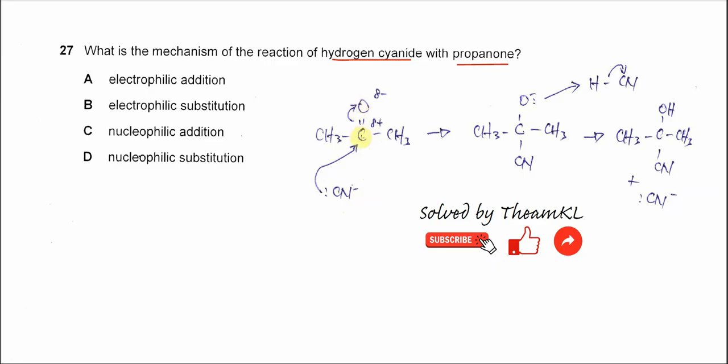After that it will form a new bonding, a new C-C bond. To form this bond, the pi bond here will break. The two electrons will move to the oxygen and it will produce this oxide.